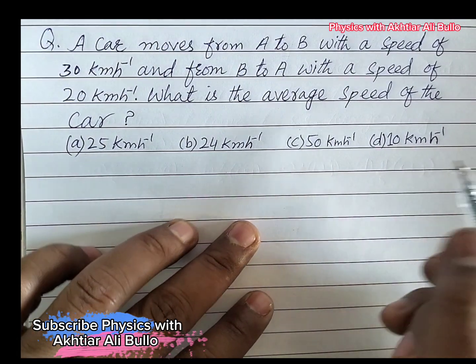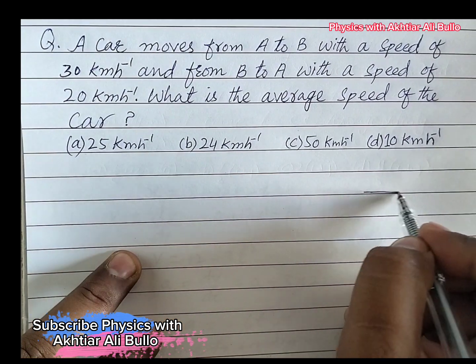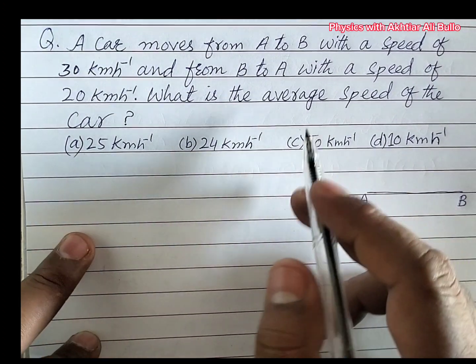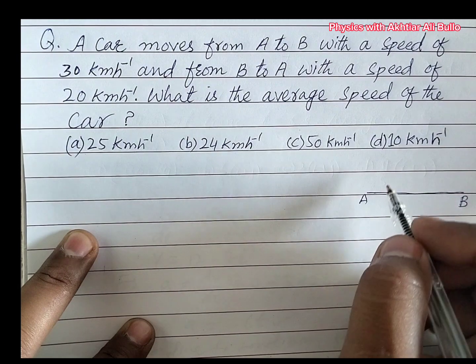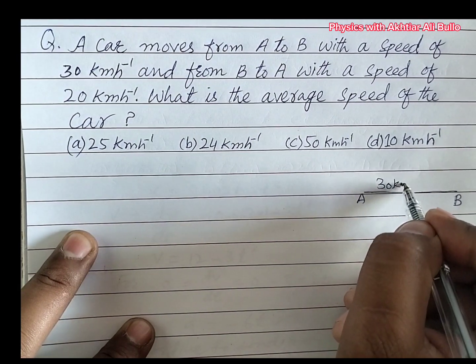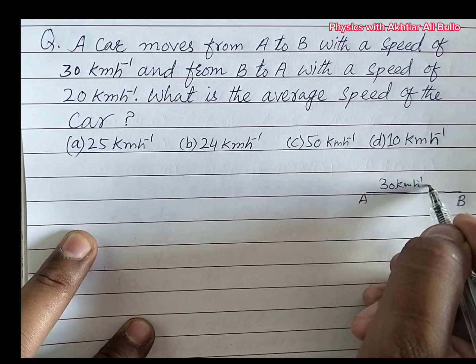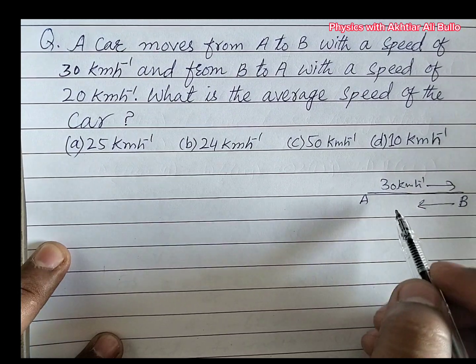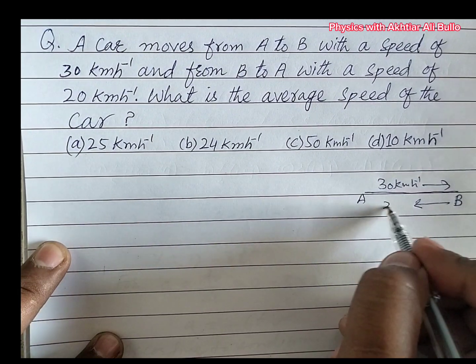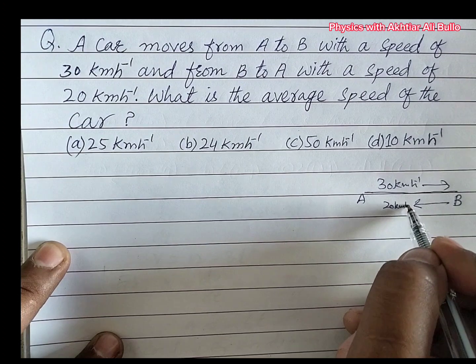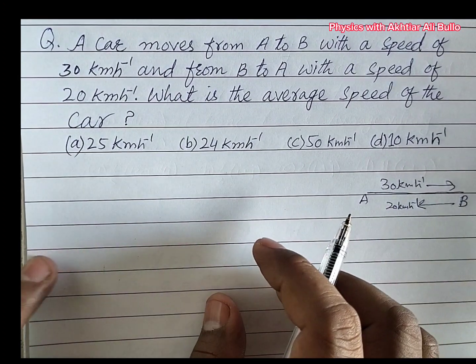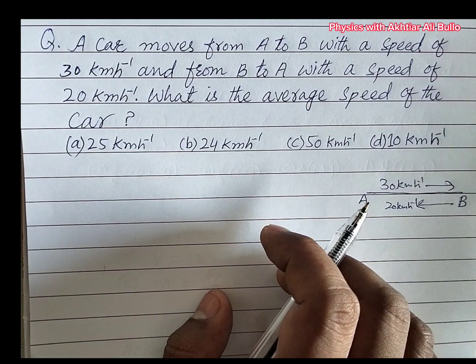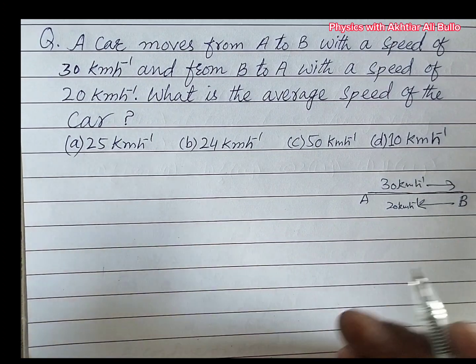There are two points A and B. So when it moves from point A to B, then its speed is 30 km per hour, and when it moves from B to A, then its speed is 20 km per hour. So we have to calculate its average speed, the average speed of the car. So first of all,